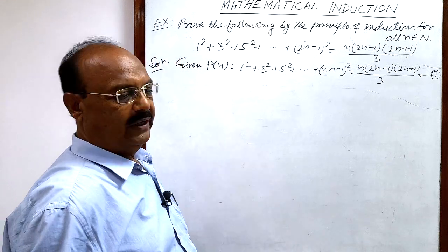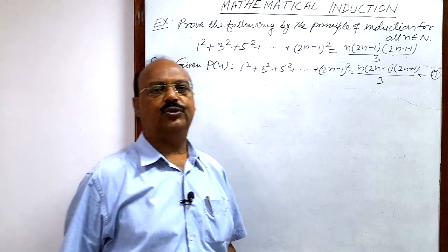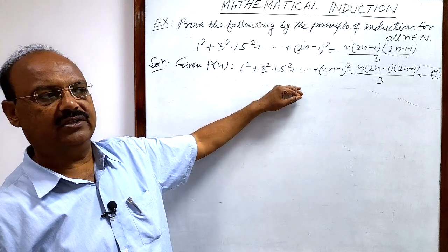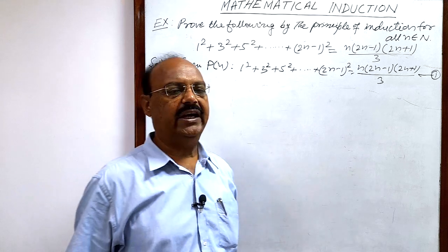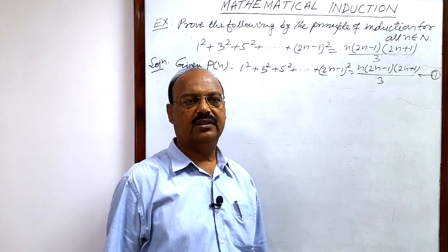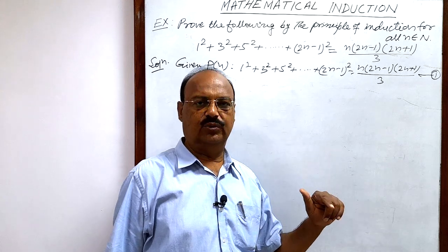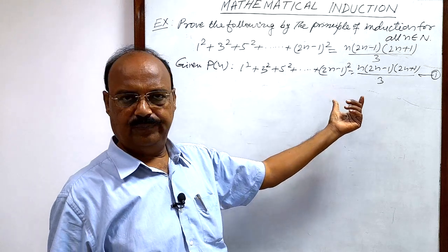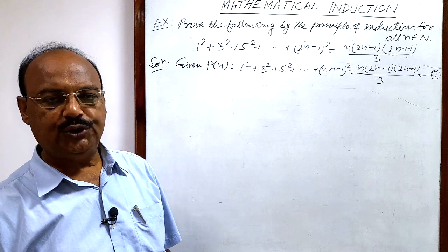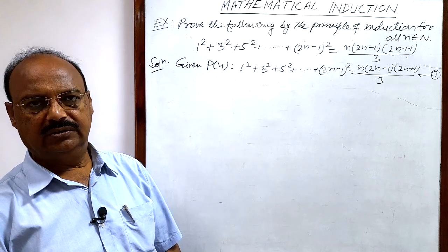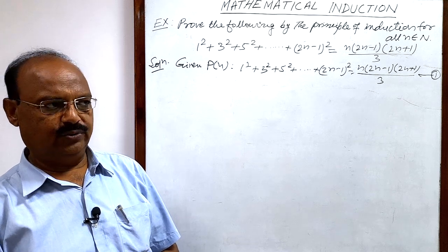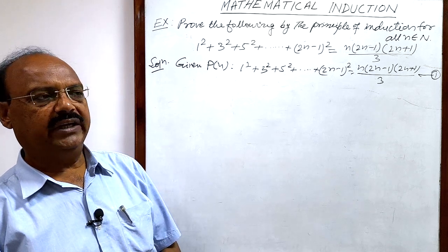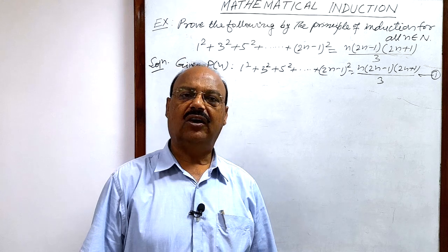By the principle of mathematical induction, you have to follow two steps. In the first step you have to show that statement Pn is true for n = 1, meaning we have to show that P1 is true — we put n = 1 in Pn. In the second step we assume that PR is true, where n = R.